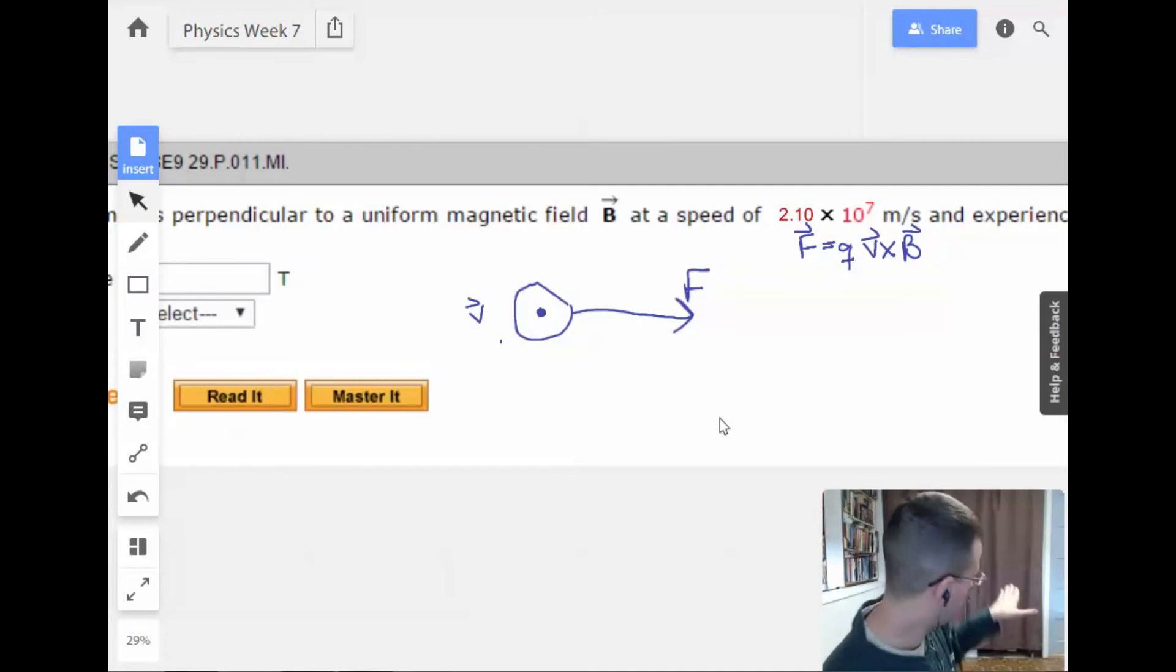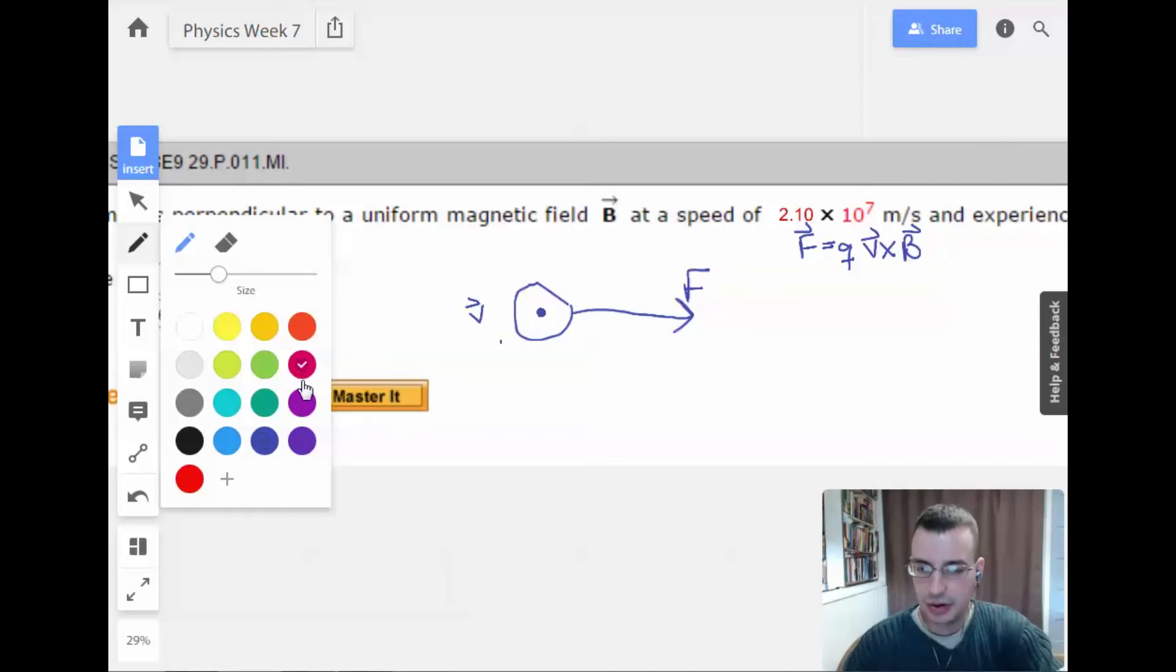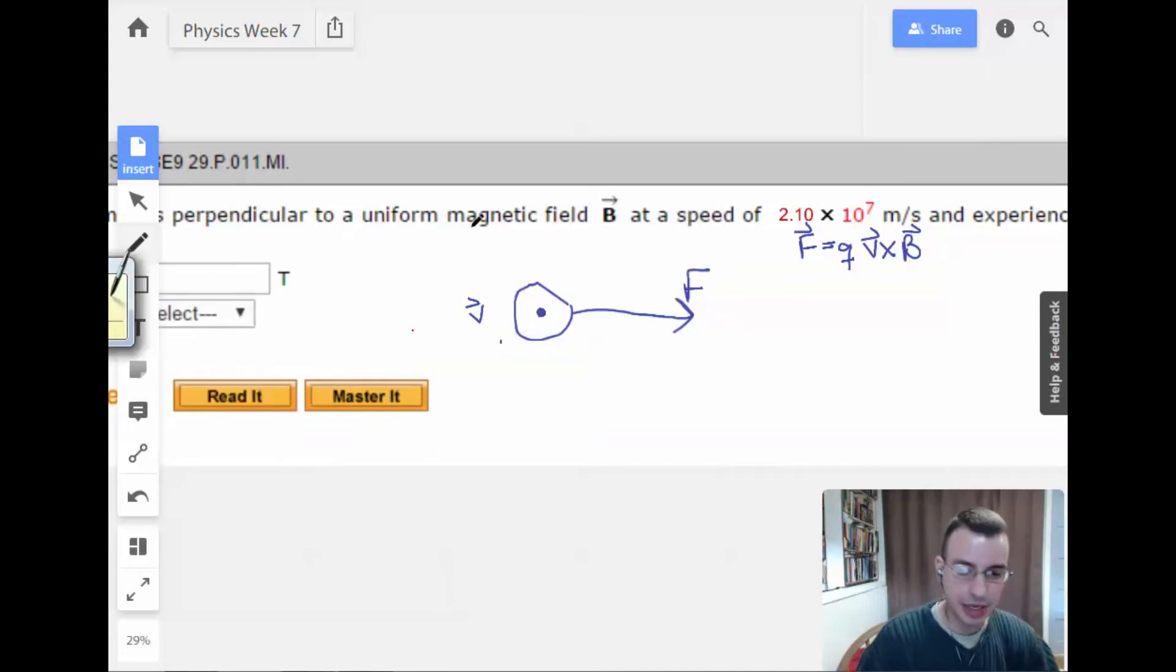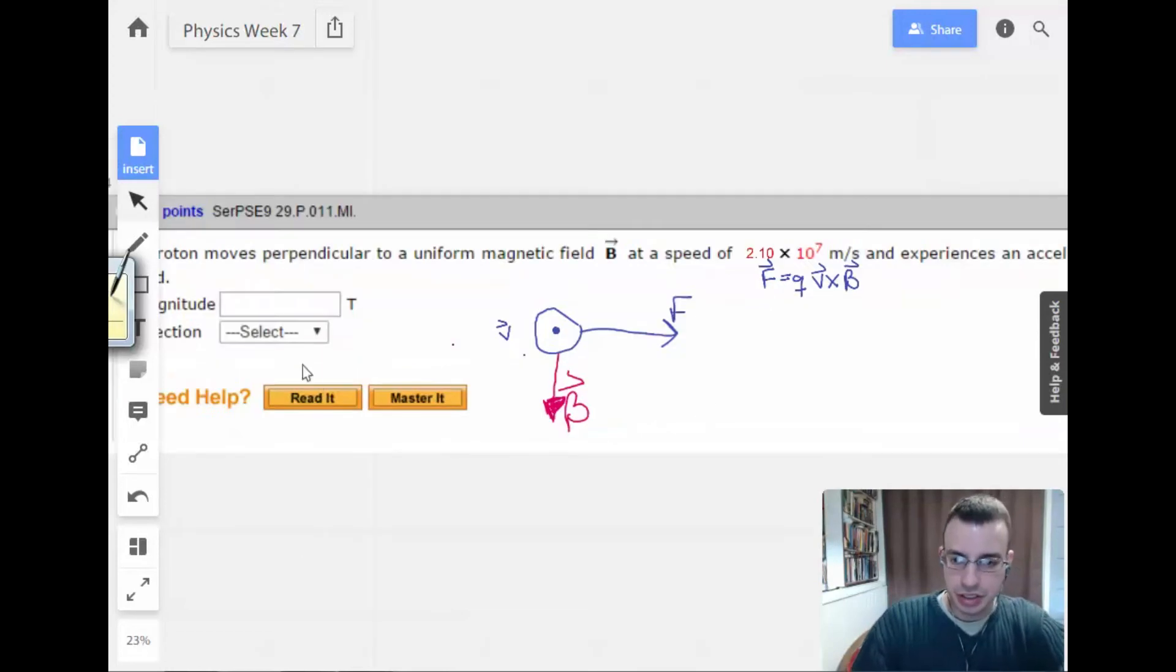So v cross B. If B is down, v cross B goes to force going that direction. So I'm going to say that magnetic field is going down. And I just did that by guessing and checking. So we knew that everything was going to be perpendicular. So if we got v coming out and force going to the right, then B is going to be either up or down. In this case, down works. So this guy will be down.